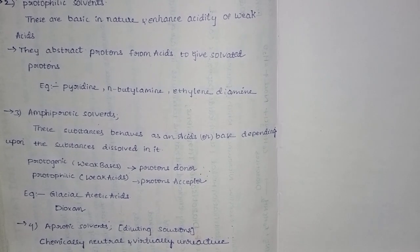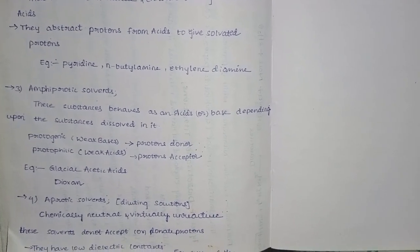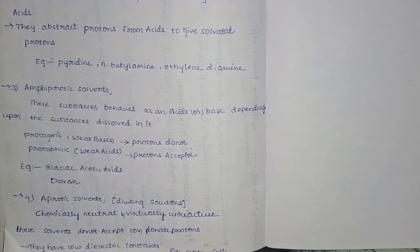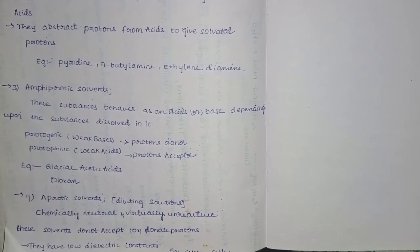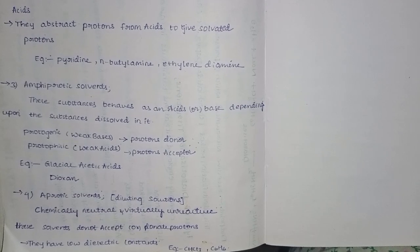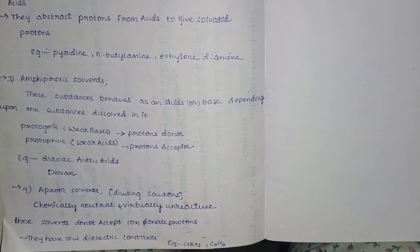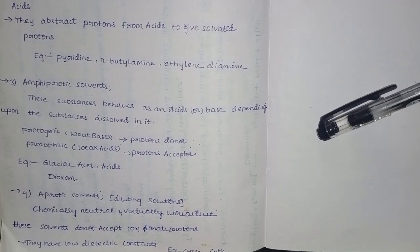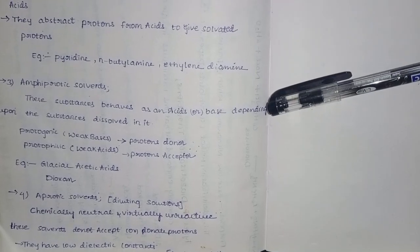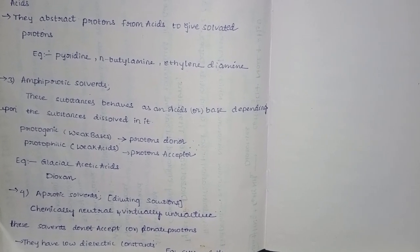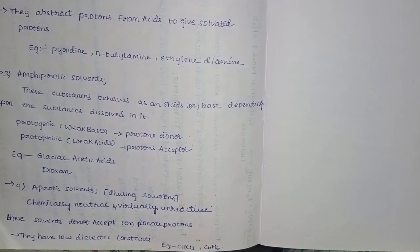N-butylamine and ethylenediamine are protophilic. Next are ampiprotic solvents. These substances behave as either an acid or a base depending upon the substance dissolved in them. Protogenic solvents are proton donors and protophilic solvents are proton acceptors. Protogenic enhances the activity of weak bases whereas protophilic enhances the activity of weak acids. Examples include glacial acetic acid and dioxane.